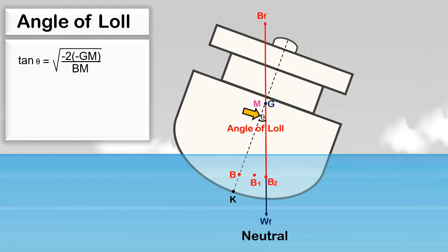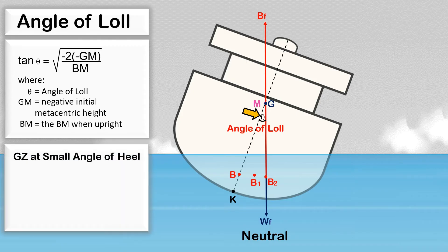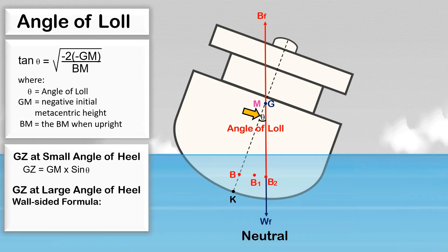This is the formula to calculate the angle of loll, where theta is the angle of loll, GM is the negative initial metacentric height, and BM is the BM when the ship is upright. To calculate the righting lever GZ at a small angle of heel, this is the formula. For a large angle of heel, we use the wall-sided formula to determine the righting lever. I will make a separate video on how to calculate the angle of loll and the righting lever at small and large angles of heel.